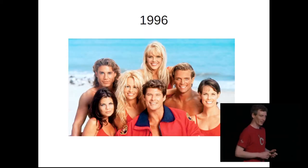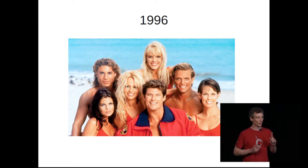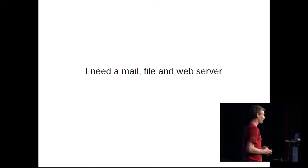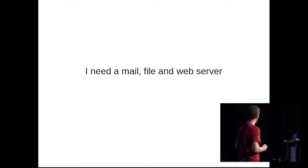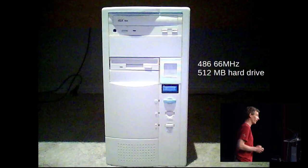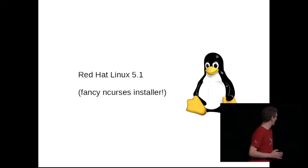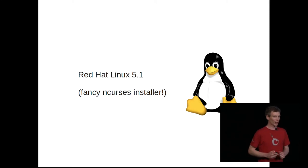Moving on to 1996. William Jefferson Clinton has just been reelected as president of the United States, and Baywatch is the most watched program in the world. IT needs have moved on — the internet's arrived. I need a mail, file, and web server nowadays. So in 1996, you're going to install it on a desktop machine: a 486, 66 megahertz, 512 megabyte hard drive, 8 megs of RAM so you can run X, and it's got a turbo button. You're going to put on Red Hat Linux 5.1 with a fancy ncurses installer — this is my first Linux distribution.